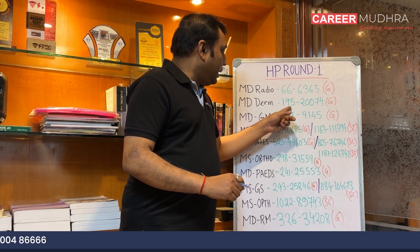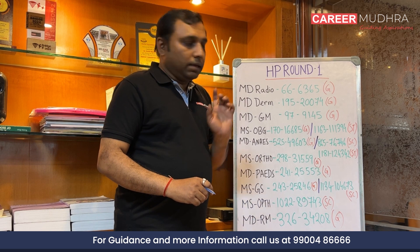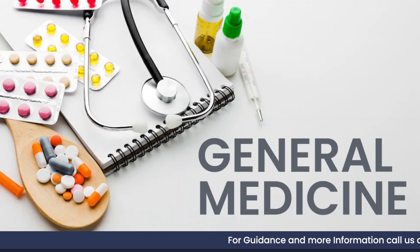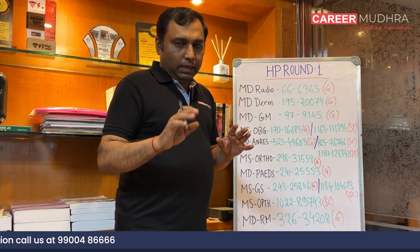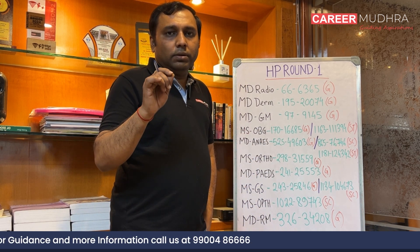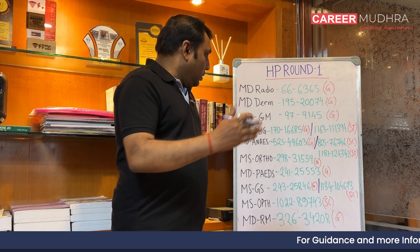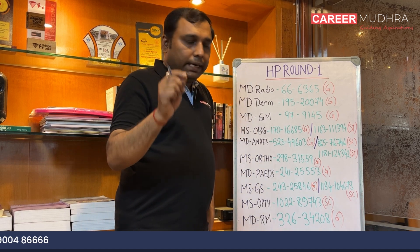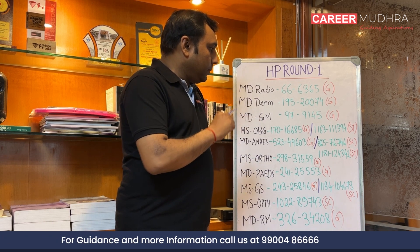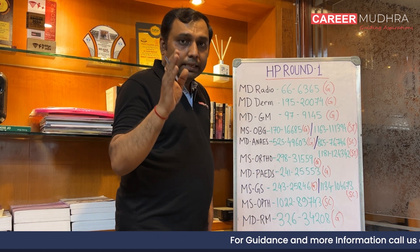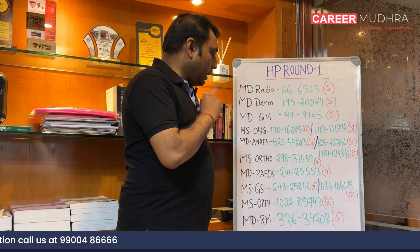MD Dermatology cutoff: state rank 195, all-India rank 20,074 — general category. MD General Medicine cutoff: state rank 97, all-India rank 9,145. The fee structure at Maharishi Markandeshwar Medical College ranges from 23 lakhs to 30 lakhs depending on the branch. For MS OBG, the general cutoff is state rank 170 (all-India rank 16,685), while the ST candidate cutoff is state rank 1,163 (all-India rank 1,11,394). This candidate can be from any part of India.